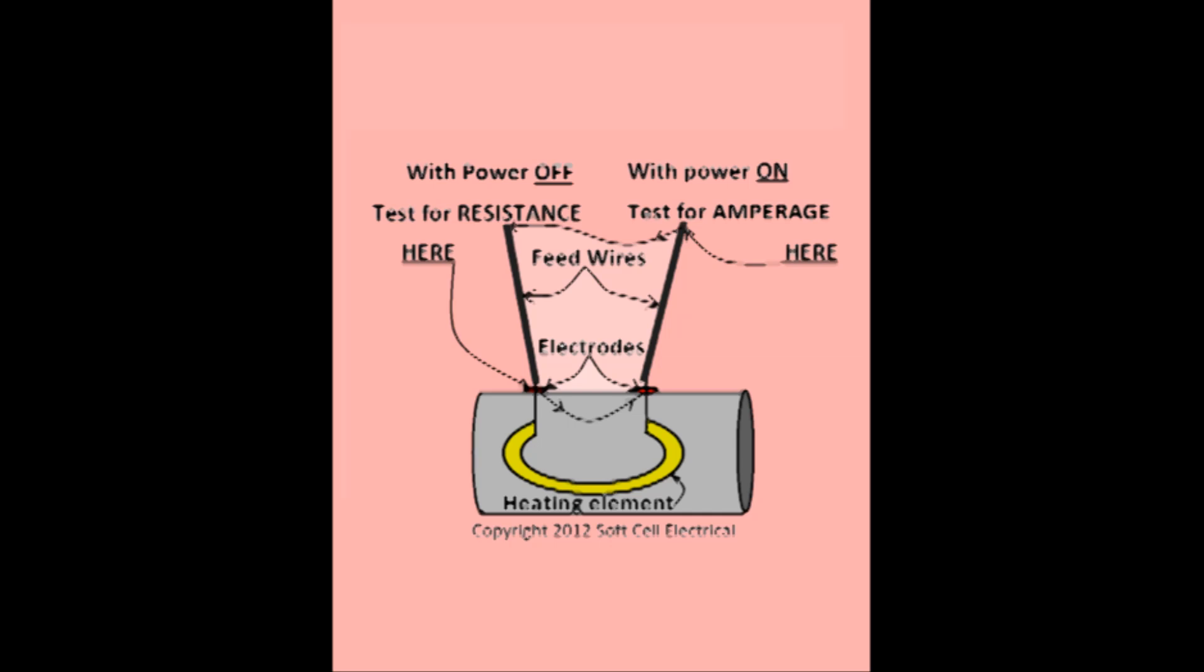With the power on or energized, use your amp probe to test for amps, and add the amperage of the two feed wires to arrive at actual amperage.